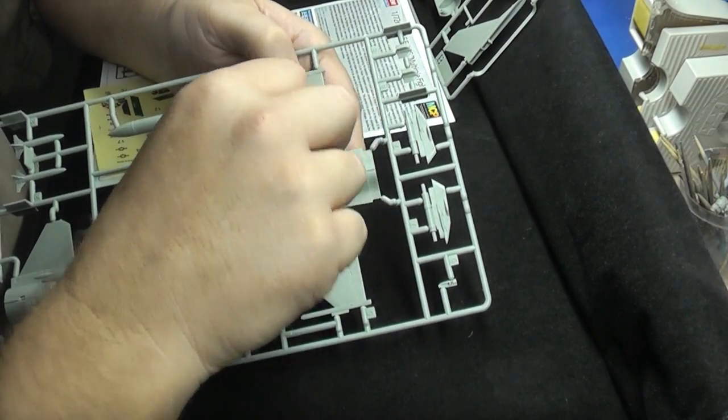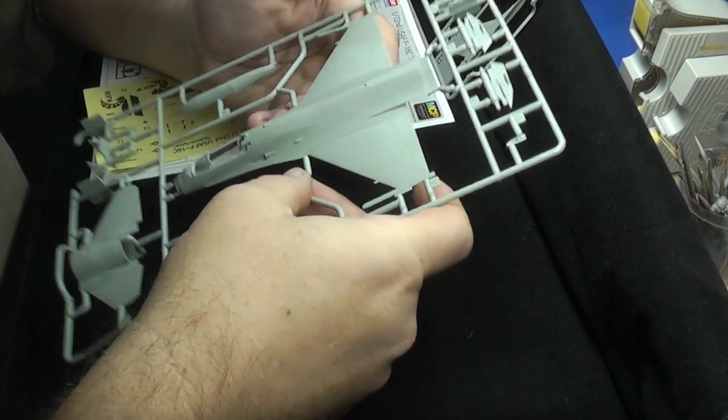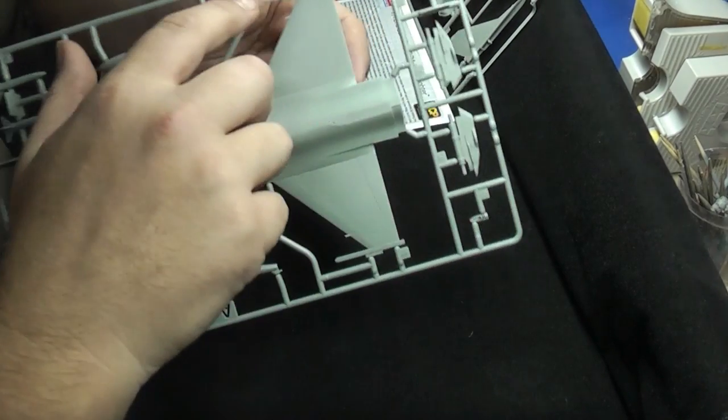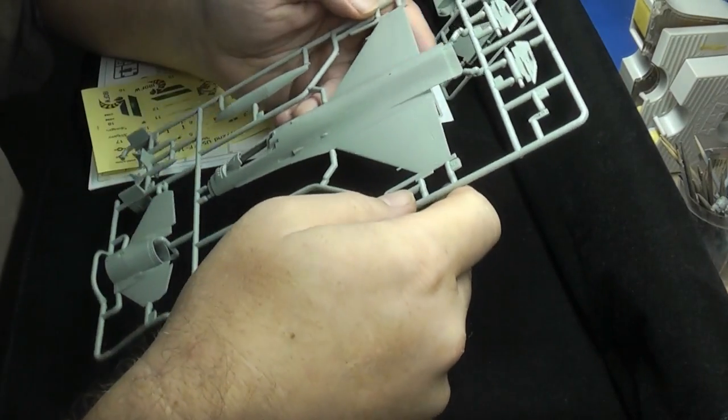It's all recessed. There's rivets, believe it or not, so it's going to be able to hold a wash quite well. I did have one issue, one of the missile rails. It's broken a little bit, a bit of glue, it'll be fixed, no problem.